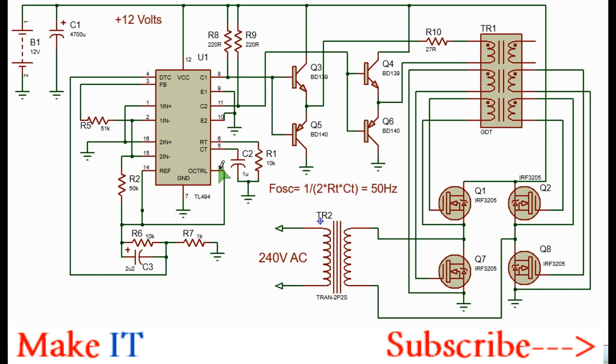For the timing you need 10 kilo-ohms and 1 microfarad which will give you an oscillation frequency of 50 hertz as shown by this frequency formula. What will happen is that pins 8 and 11, the open collectors, will be pulled high and low in alternating fashion. The open emitters are grounded.